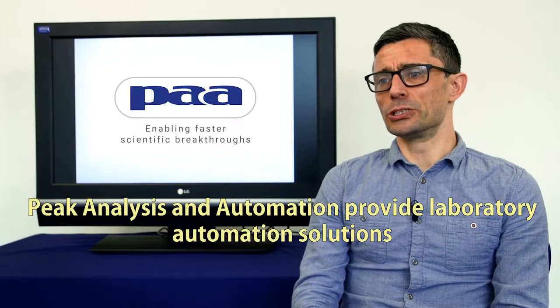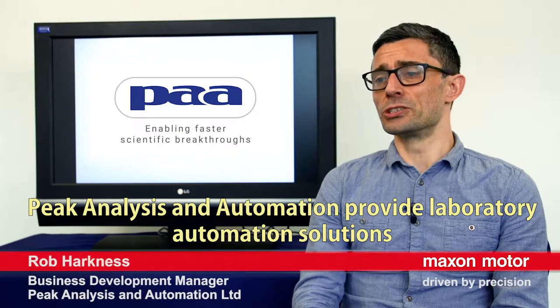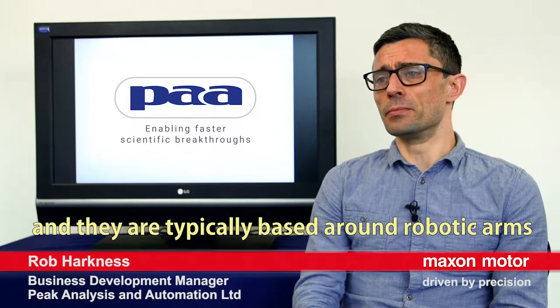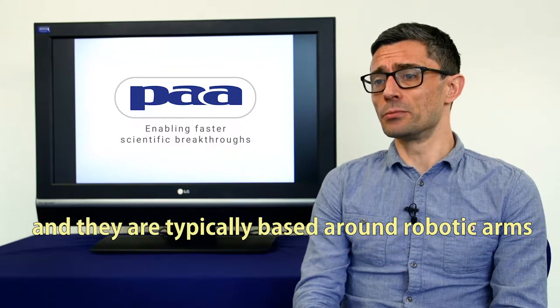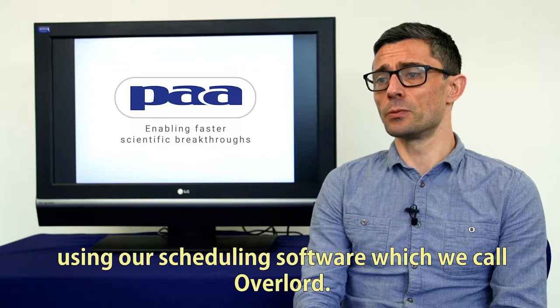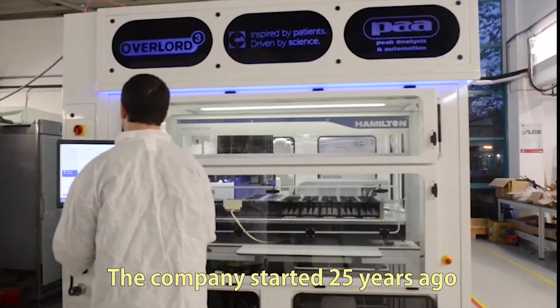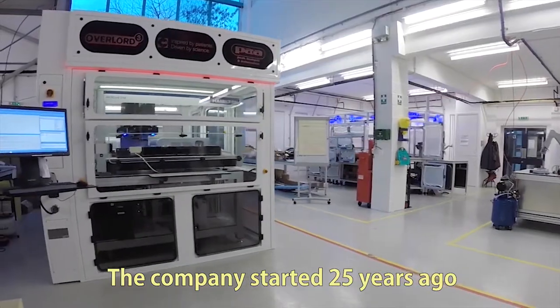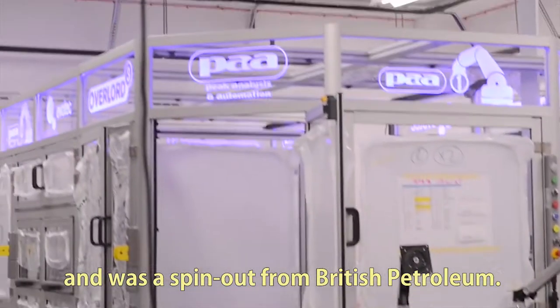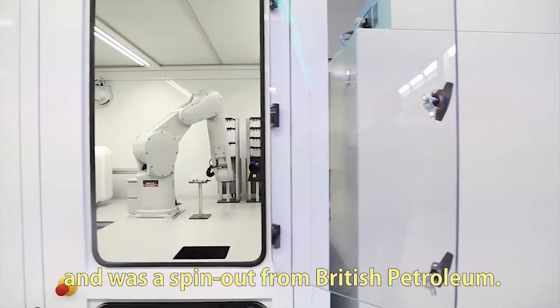Peak Analysis and Automation provides laboratory automation solutions. These are typically based around robotic arms using our scheduling software, which we call Overlord. The company started 25 years ago as a spin-out from British Petroleum.